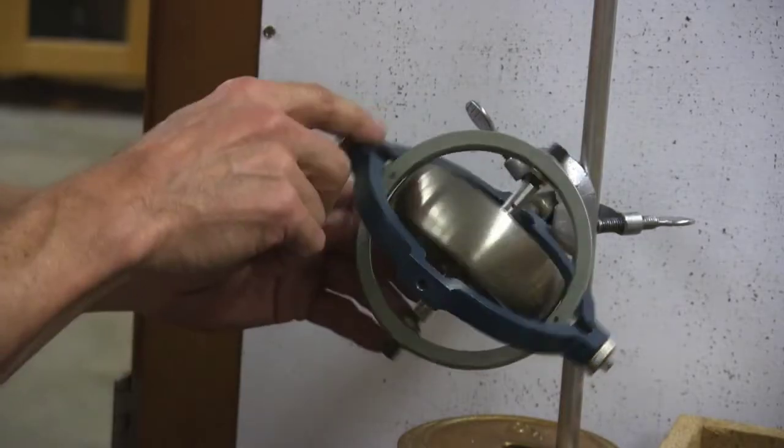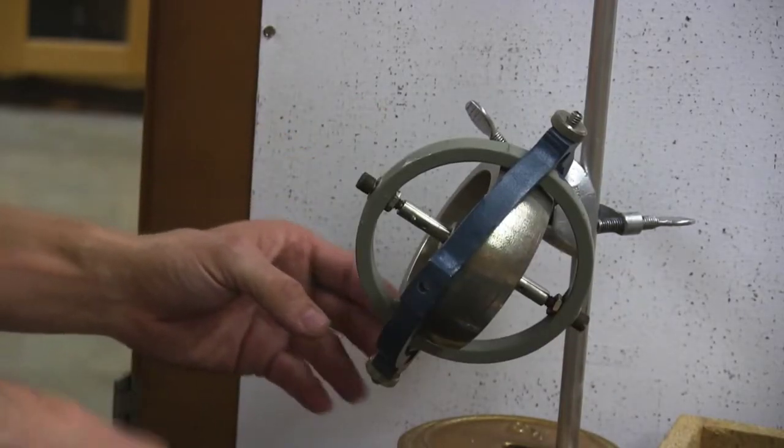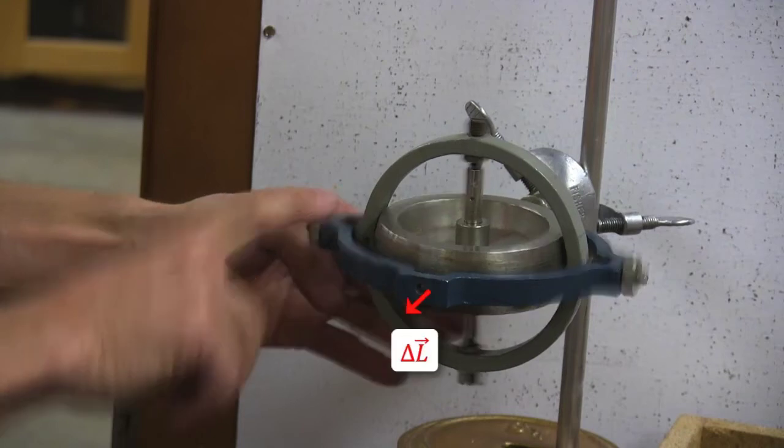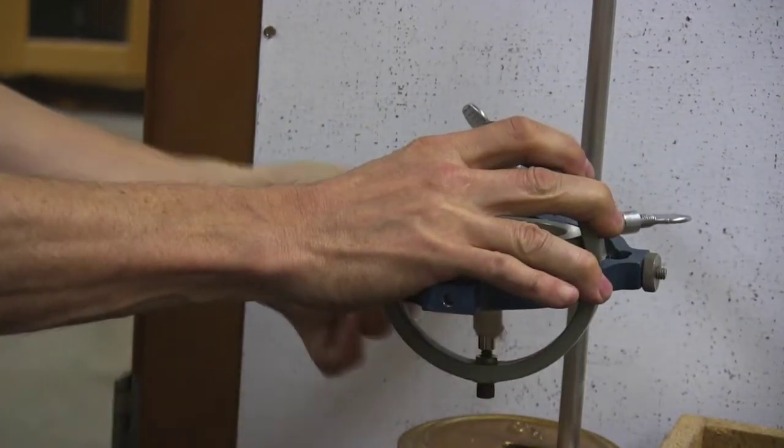When the gyroscope is not spinning, it's very easy to turn. It spins in the same direction as the torque I provide with my finger, giving it an angular impulse. However,